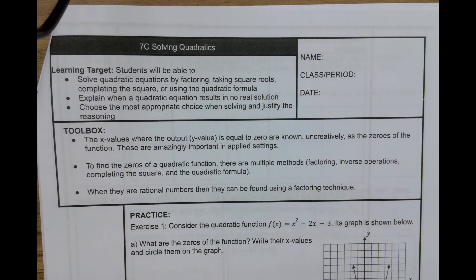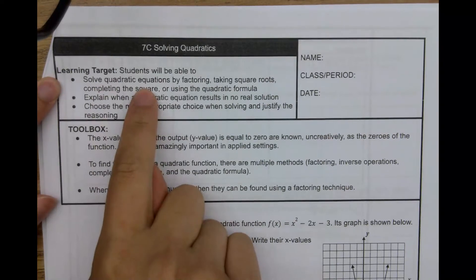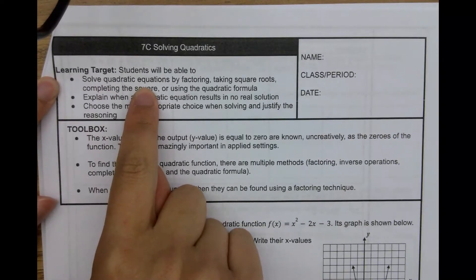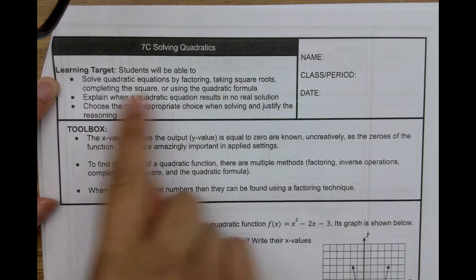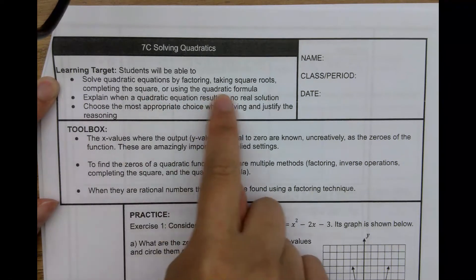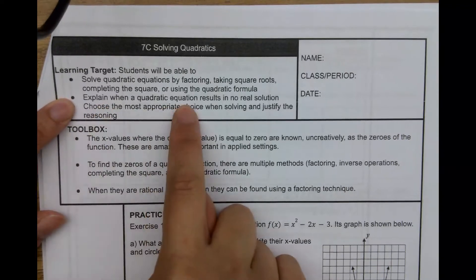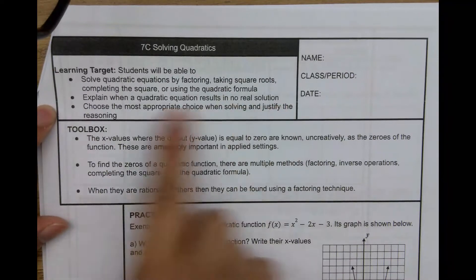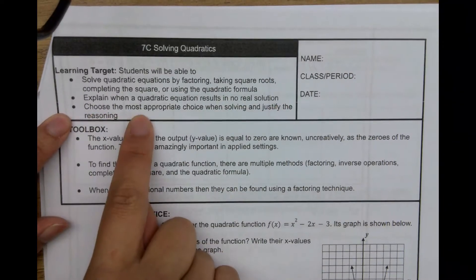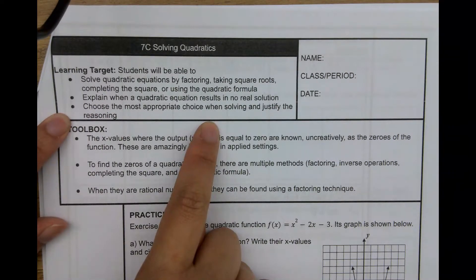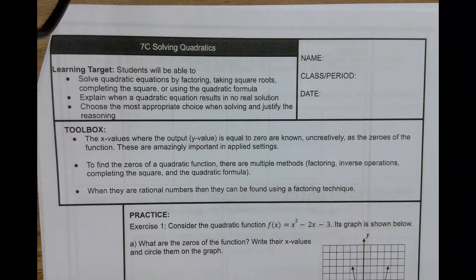Hi guys, so we are now in our new learning target, which is on solving quadratics. By the end of this whole learning target, you should be able to solve quadratic equations using multiple methods, such as factoring, taking square roots, completing the square, or using the quadratic formula. You will also be able to explain when a quadratic equation results in no real solution, and to choose the most appropriate method and justify the reasoning of why you chose it.